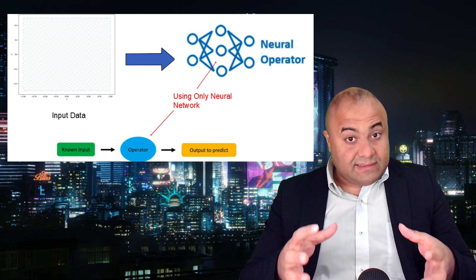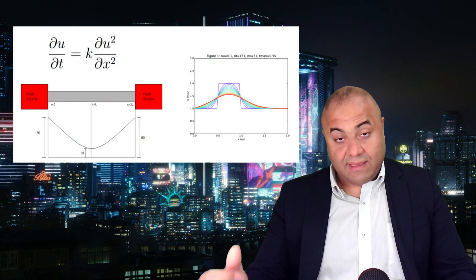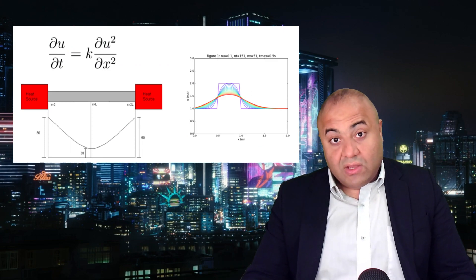A network complex enough to handle more complex physics can basically simulate a system — for example, solving the heat equation or even a fluid system to predict, from its initial conditions and boundary conditions, what's going to happen to that fluid over time. For example, predicting upcoming weather from only a satellite map of the clouds and how they move — all using only the data.